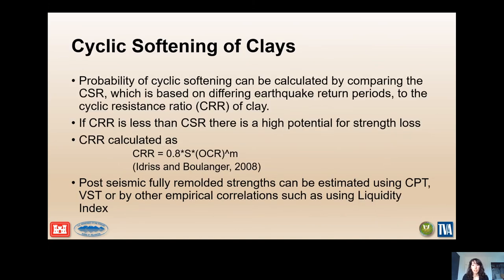The CSR equation is the stress imposed by an earthquake normalized by the effective overburden pressure — the Seed simplified method — primarily a function of peak ground acceleration. This cyclic stress can also be calculated using more rigorous one- or two-dimensional computer programs using site-specific time histories. The probability of liquefaction is a function of both the CSR and blow counts corrected for overburden stress and fines content. The probability of cyclic softening can be calculated by comparing the CSR to the cyclic resistance ratio (CRR) of the clay; if the CRR is less than the CSR, there is a high potential for strength loss. The CRR is a function of stress history and over-consolidation ratio. The strength ratio S for normally consolidated clay is typically around 0.2 to 0.25, and coefficient M is usually around 0.8, as referenced in the Ladd and Foott paper from the 1970s.